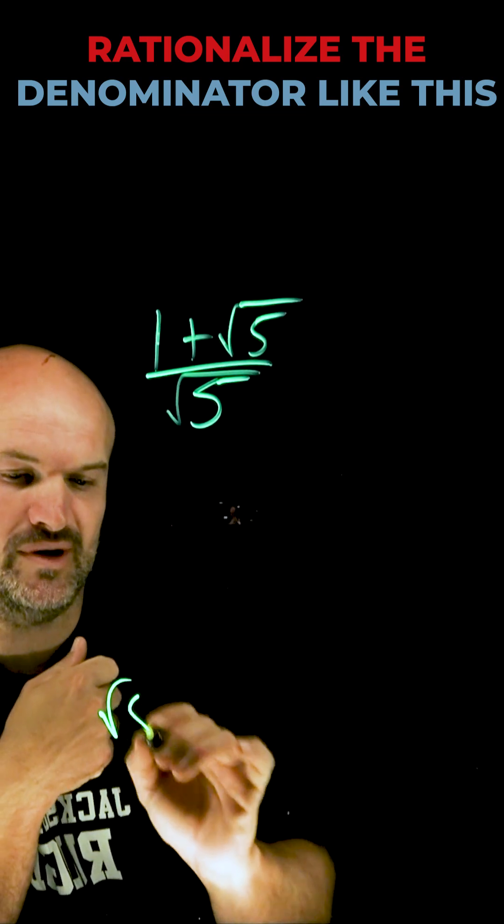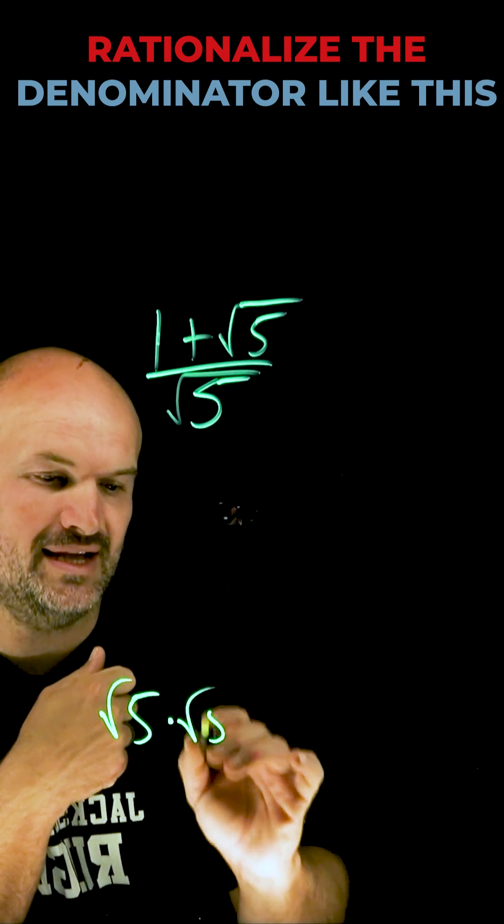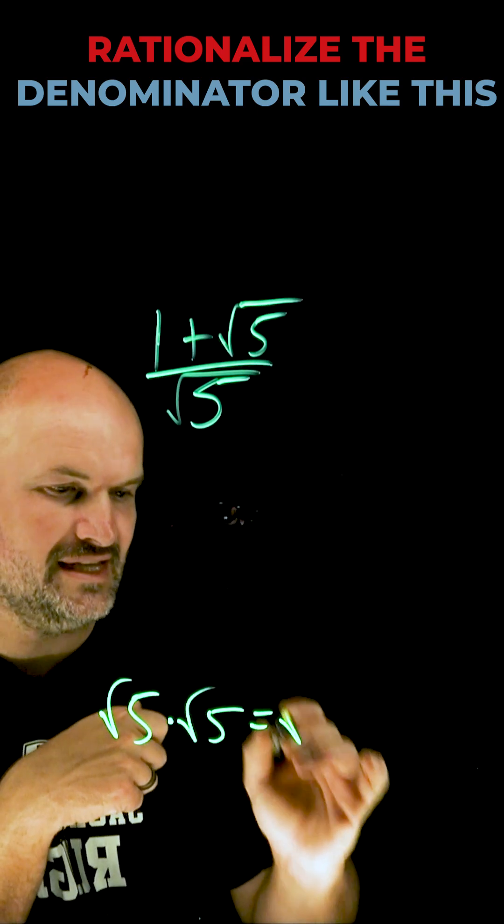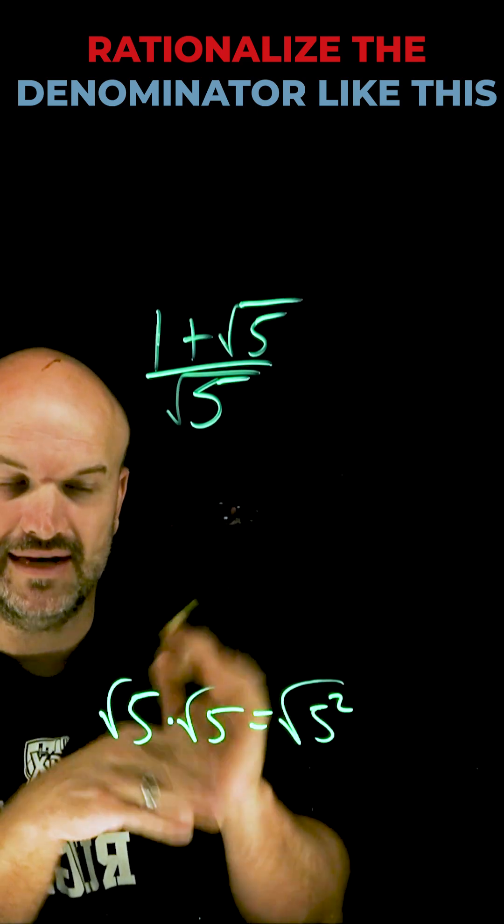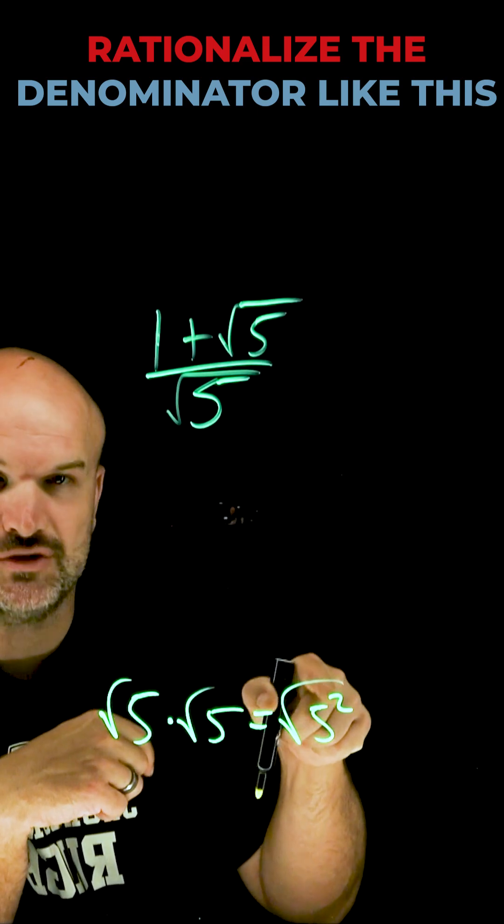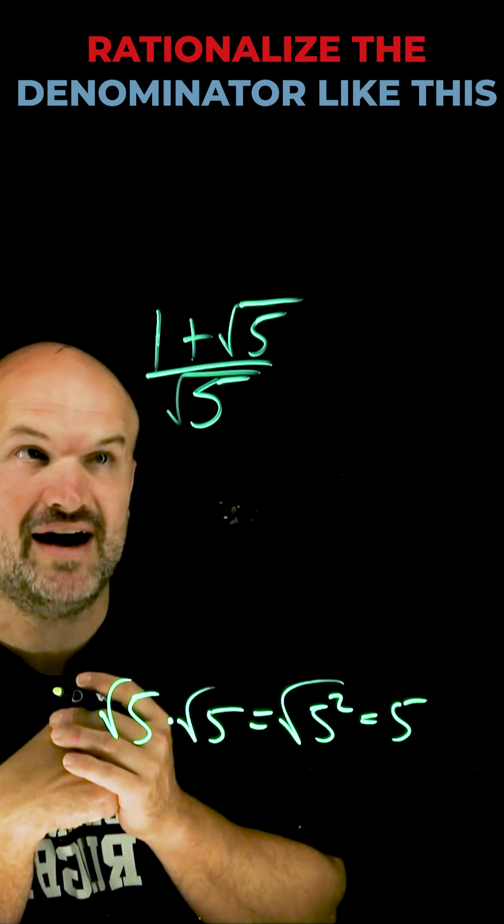So if I have the square root of five and I multiply it by itself, the square root of five, that's going to give me the square root of five squared. Now it's important to understand the square root and squaring are inverse operations, so that's just going to give us a five.